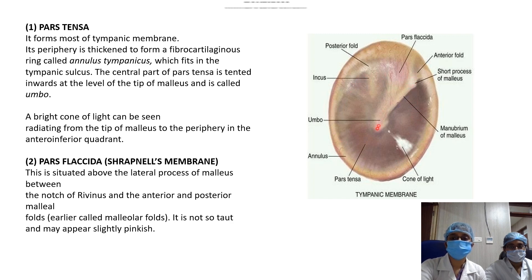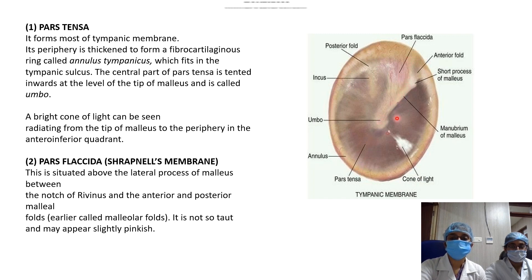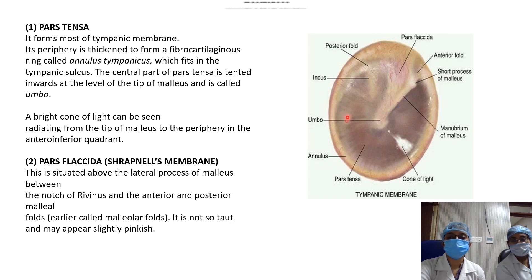On the right tympanic membrane, we can see the handle (long process) of the malleus, the short process of the malleus, and the umbo at its tip. The annulus is deficient above, forming the pars flaccida. The cone of light is seen in the anteroinferior portion. The tympanic membrane can be divided into four quadrants by drawing a line along the handle of the malleus and a horizontal line through the umbo: posterosuperior, posteroinferior, anterosuperior, and anteroinferior. The cone of light is characteristically in the anteroinferior quadrant.